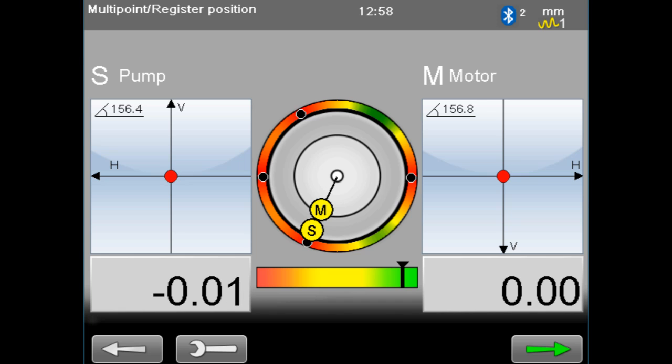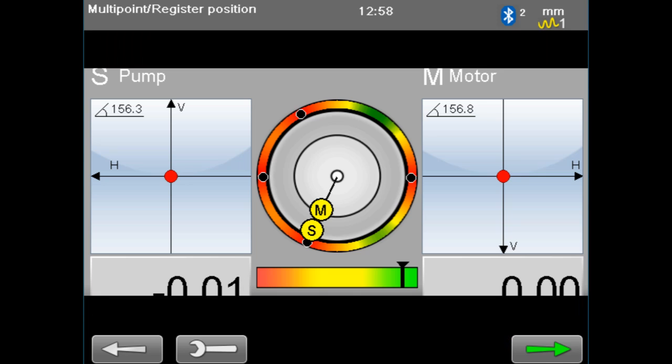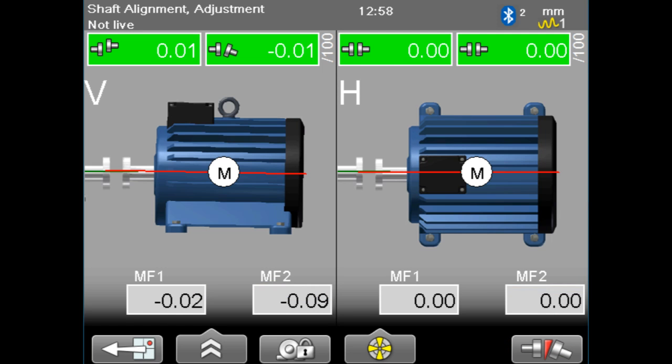Once you have collected enough data the result is available through pushing the green arrow. The alignment system is showing us that the machines are within tolerance.